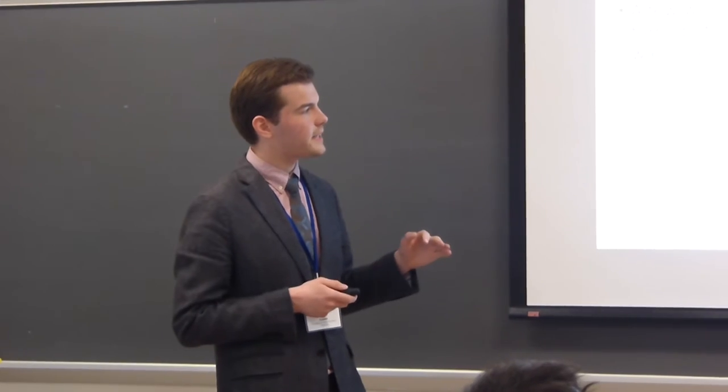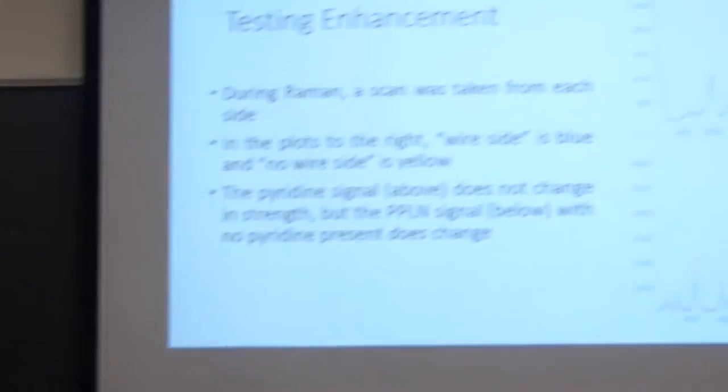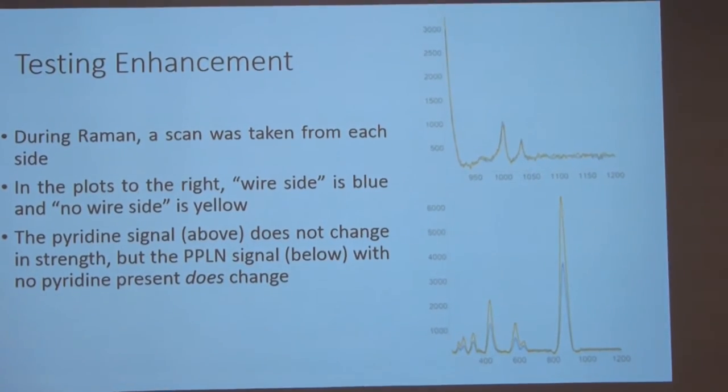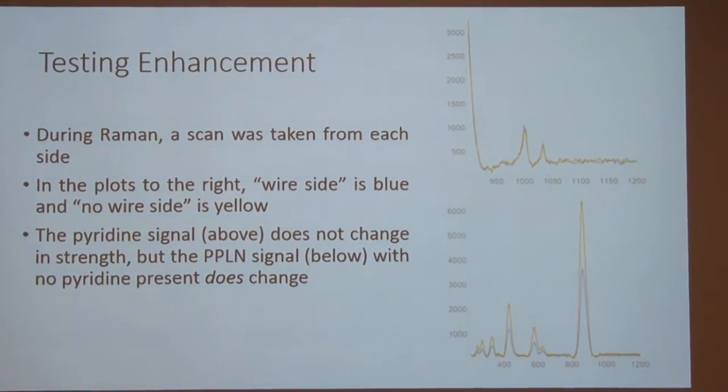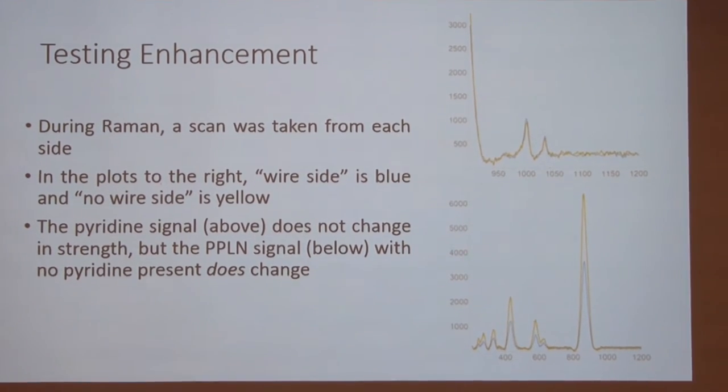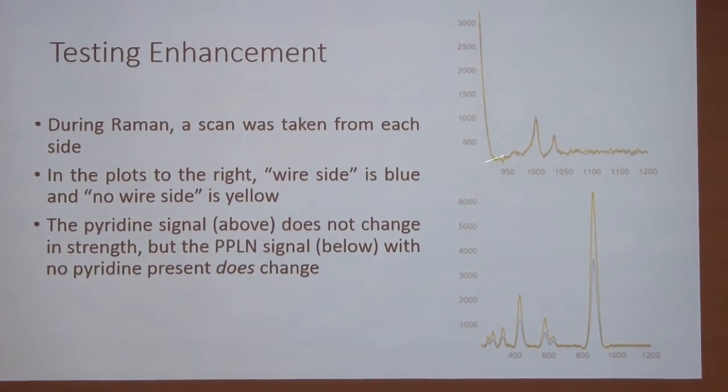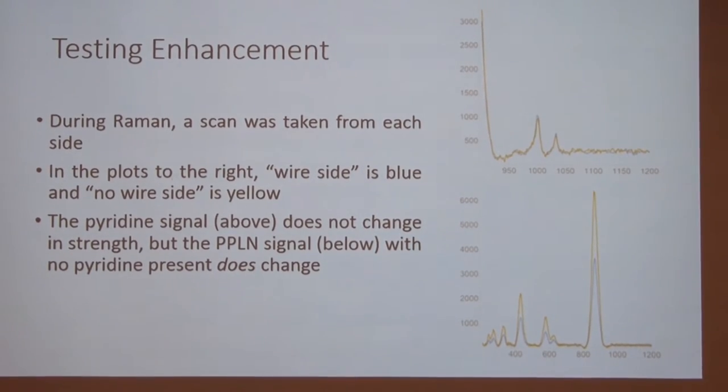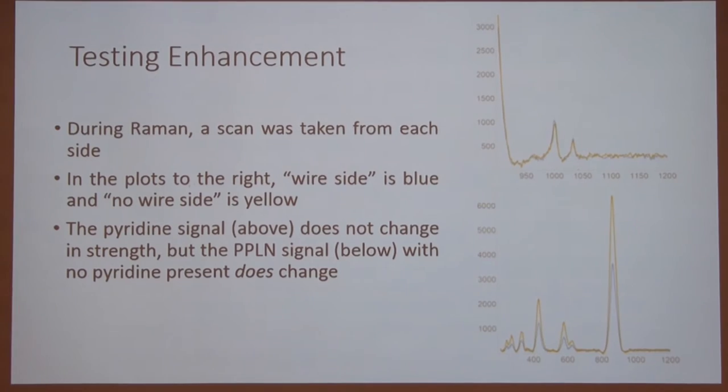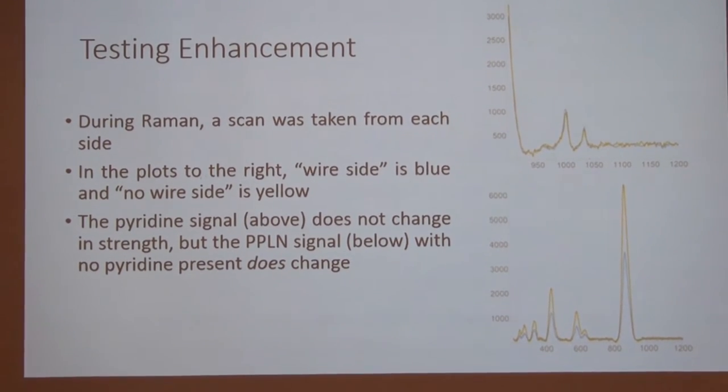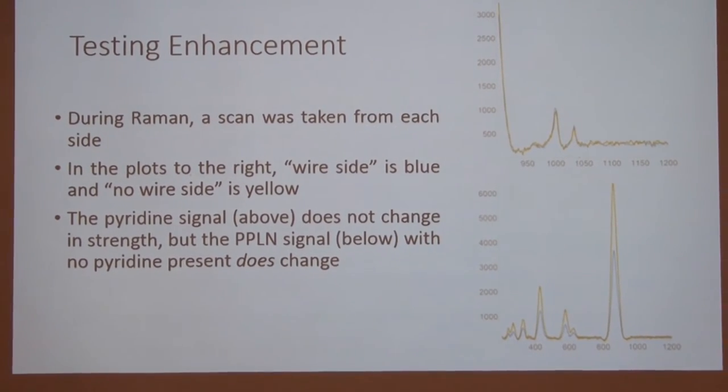So, when we take that sample and we do Raman spectroscopy on it, here we're zoomed in on the pyridine doublet. Blue is with wires. We're looking at the side that has the wires on it. And yellow is the side without wires on it. And you can tell that the heights, the intensities, are pretty much exactly the same. That means that the wires are not enhancing the signal.